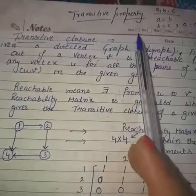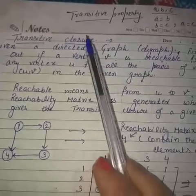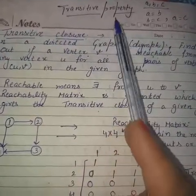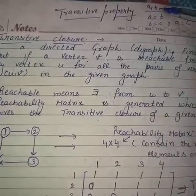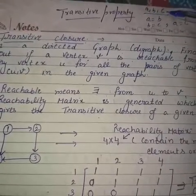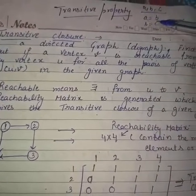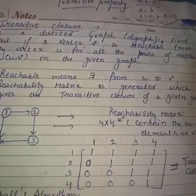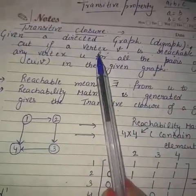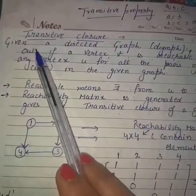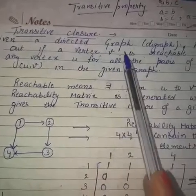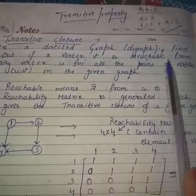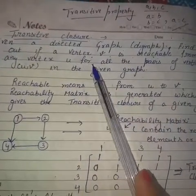The topic is transitive closure. As we know, the transitive property states: for three elements a, b, c, if a equals b and b equals c, then a also equals c. This property is followed in transitive closure as well. A transitive closure is: given a directed graph (also known as a digraph), we have to find out if a vertex v is reachable from any vertex u, for all pairs of vertices (u, v) in the given graph.